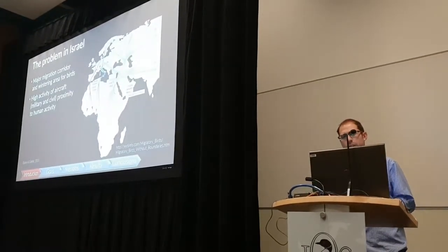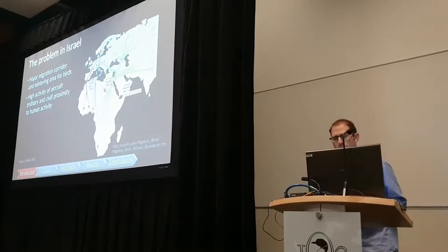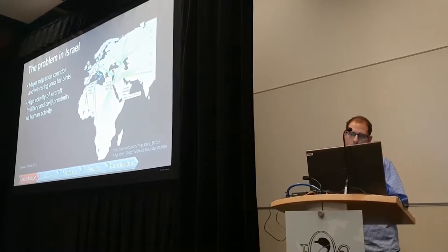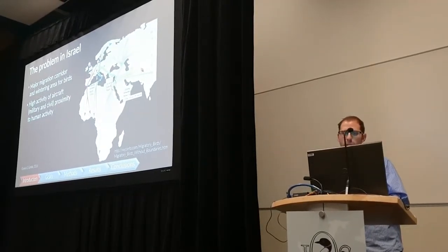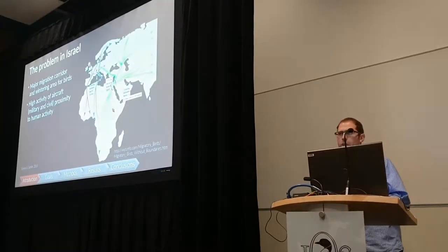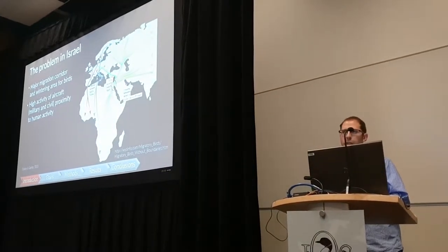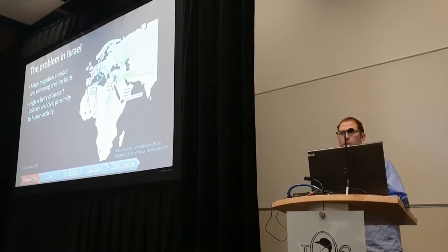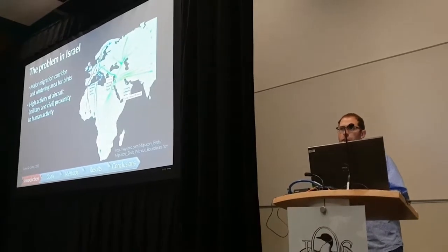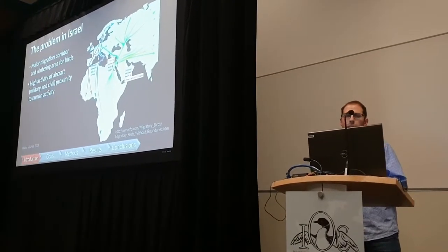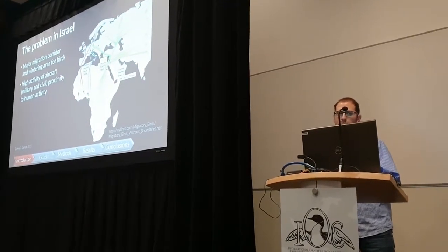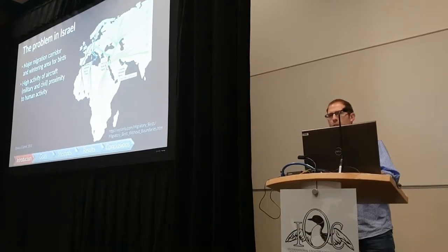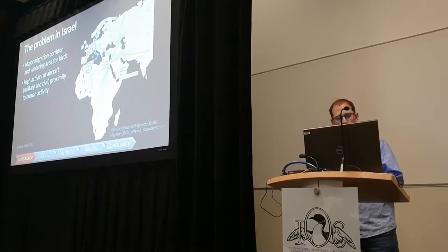The problem with Israel is even higher. Israel is a tiny country at the junction of three continents — European, Asian, and African — making it a major corridor for migrating birds. Half a million birds migrate through Israel each year, making it one of the biggest bird migration areas in the world. There is also high aircraft activity, very close to human activity such as landfills, gravel sites, and recreational areas.